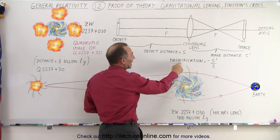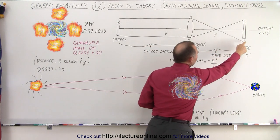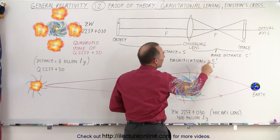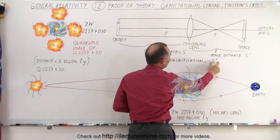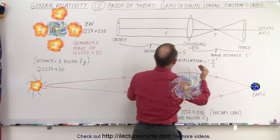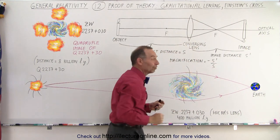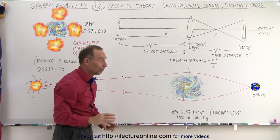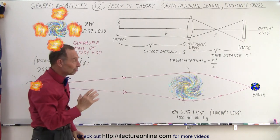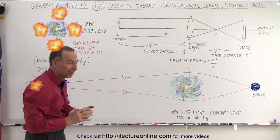Notice that the magnification of the image is equal to minus s prime over s, where s prime is the image distance and s is the object distance. Well, it turns out in space, because it curves your space due to the general theory of relativity, we have the same effect.